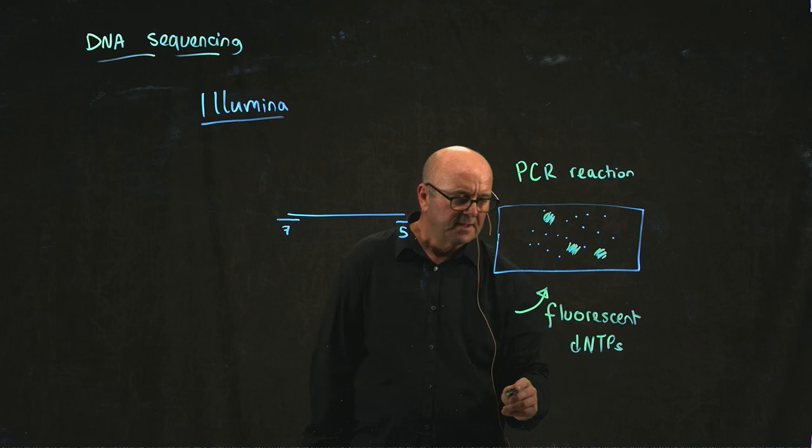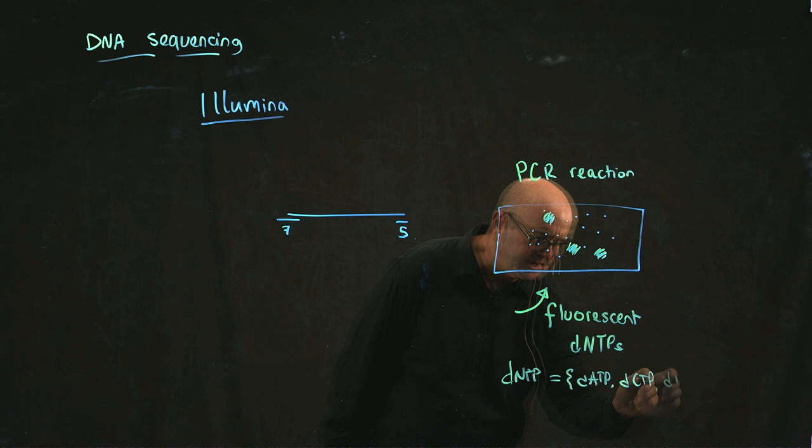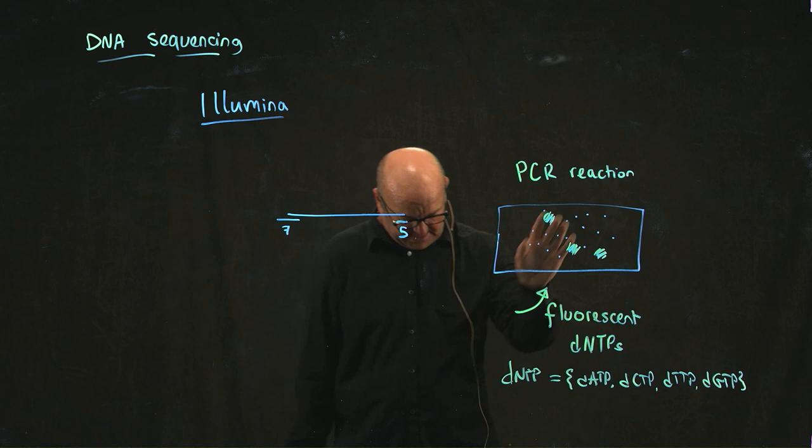So DNTP is a combination of DATTP, DTTP, and DGTP. The N means any.